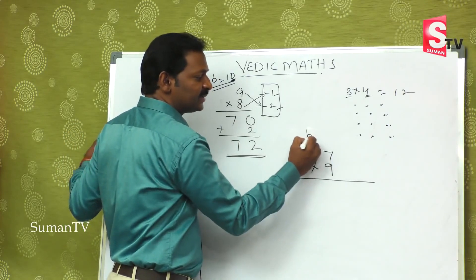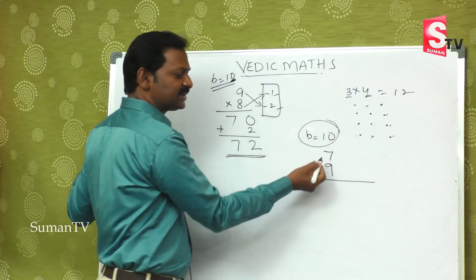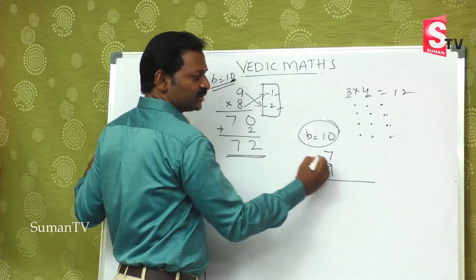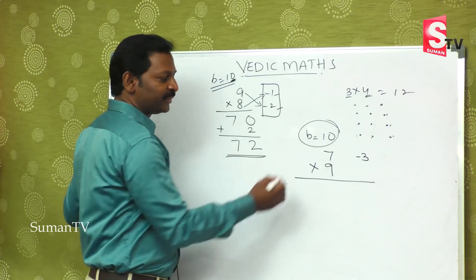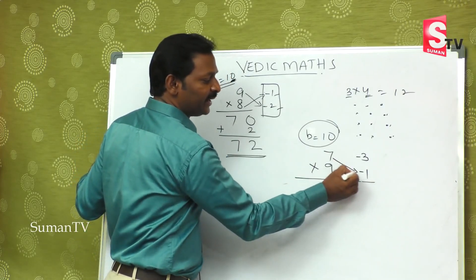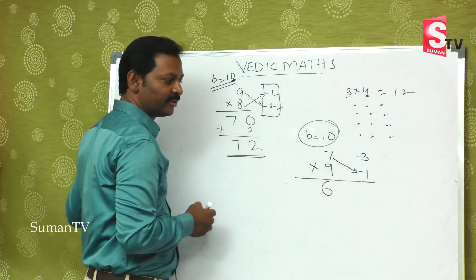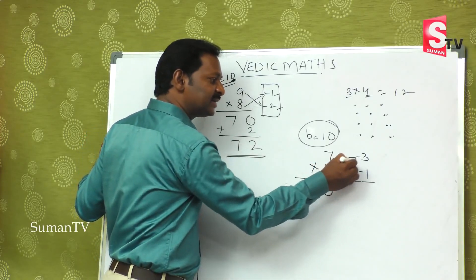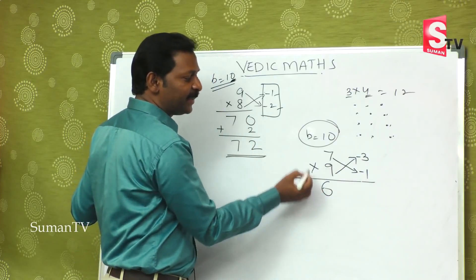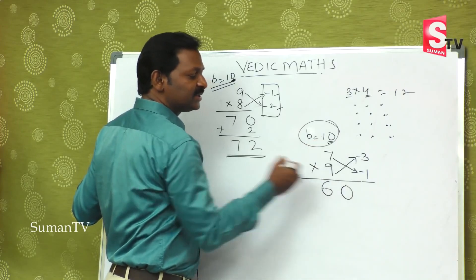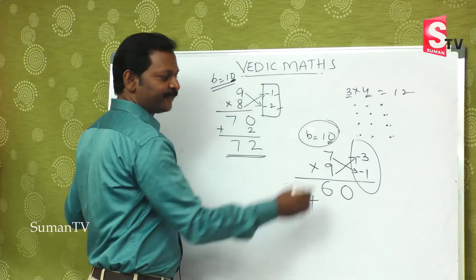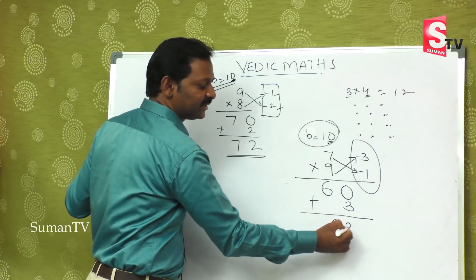Now, next example: 7 is close to 10, and 9 is close to 10. 7 and 10 — the difference is minus 3. 9 and 10 — the difference is minus 1. Cross-subtract: 7 minus 1 is 6, or 9 minus 3 is 6 — that is the definite first part of the answer. Then, minus into minus is plus: 3 times 1 is 3. So 63 is the answer.